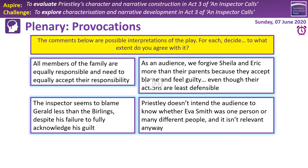Statement three: as an audience, we forgive Sheila and Eric more than their parents because they accept blame and feel guilty, even though their actions are least defensible. There is some truth in that — Sheila and Eric become figures of moral understanding by the end of the text. They accept that what they did was wrong. The parents don't, so we blame them more — even though Birling can defend firing someone who went on strike, and Mrs Birling can defend refusing charity to someone who lied about their situation. We do accept Sheila and Eric more at the end, and it's also possible to partially blame the parents for Sheila and Eric's attitudes, since they've been influenced by their parents' behaviour towards the working class.